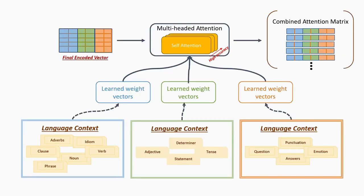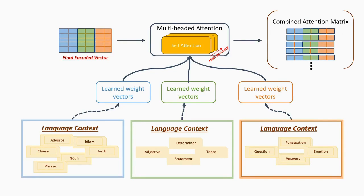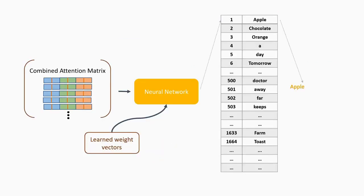To improve its accuracy, Transformer uses multiple attention mechanisms called multi-head attention with different weights to generate a combined attention matrix. Finally, the generated matrix is mapped to a specific word using another set of weights.